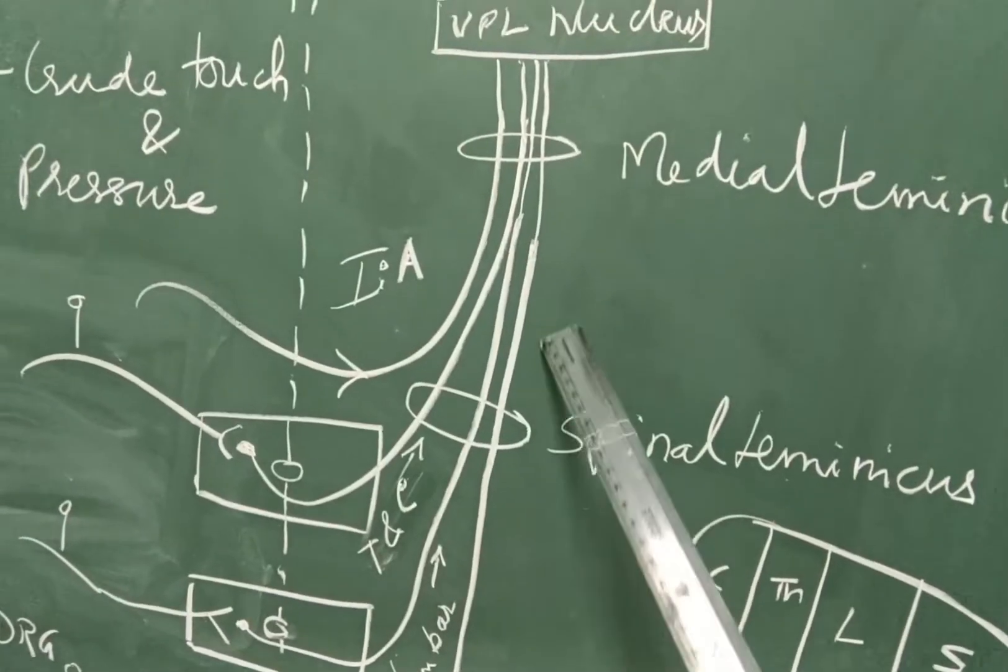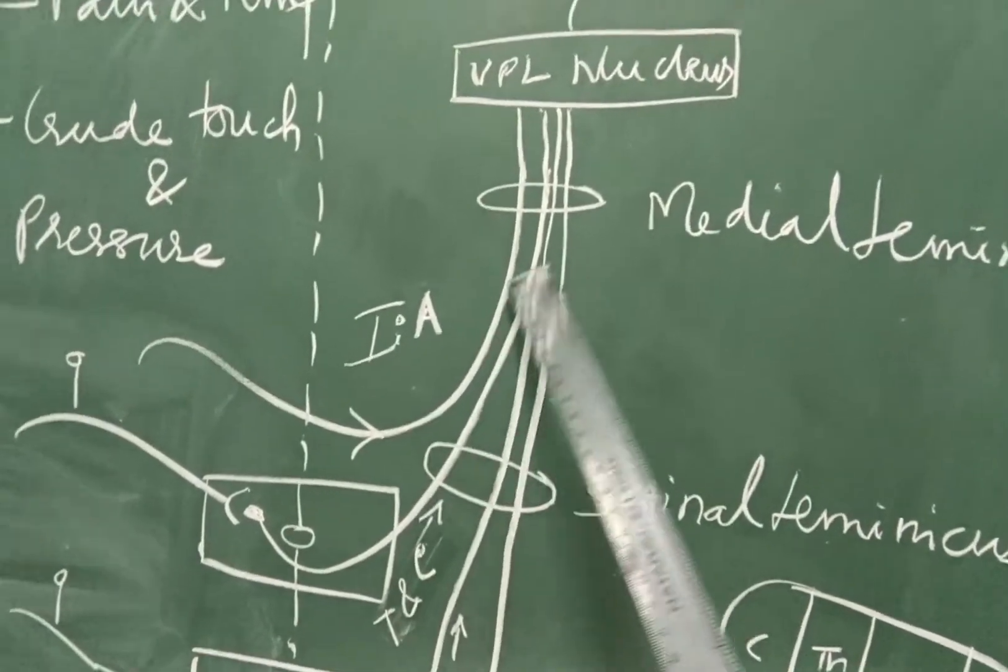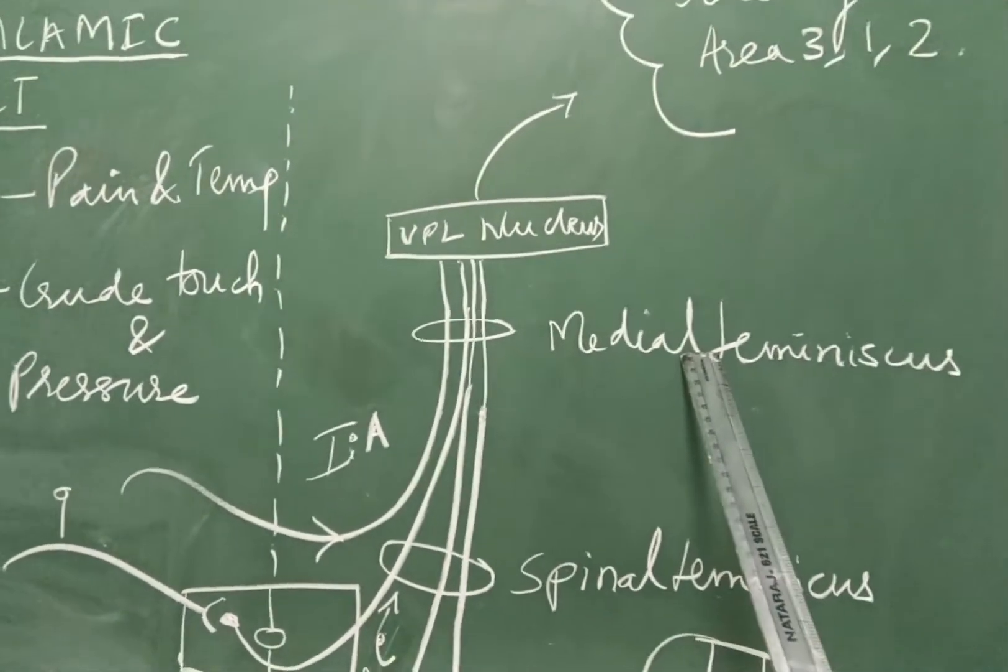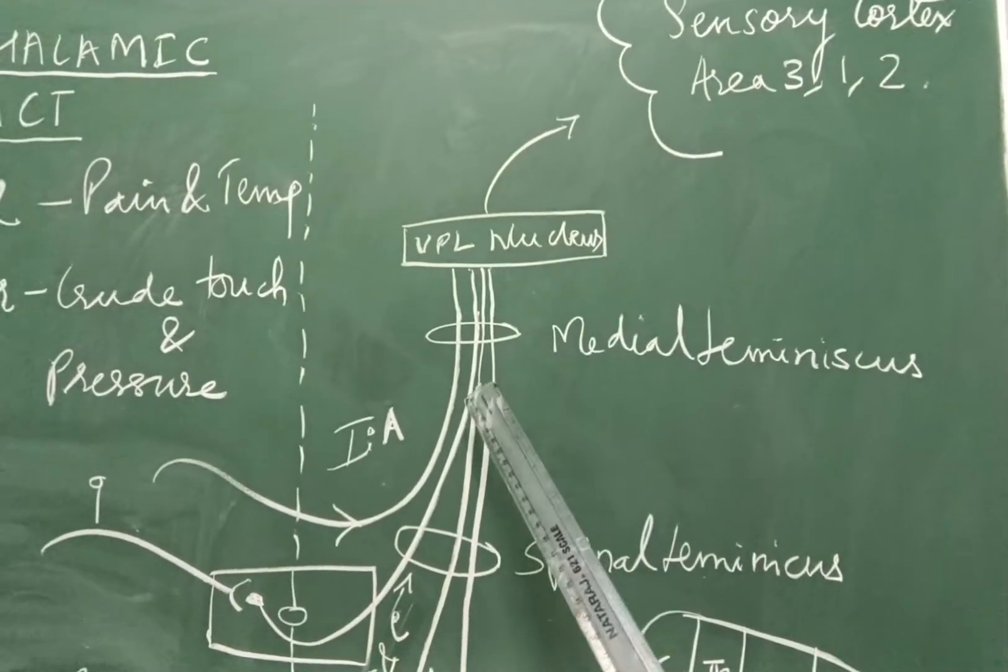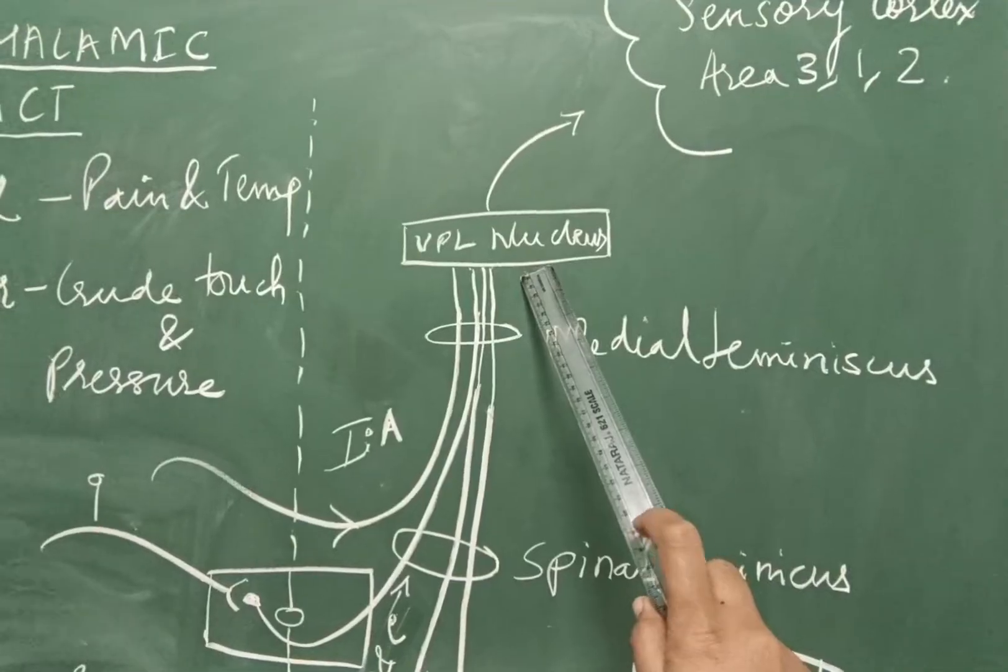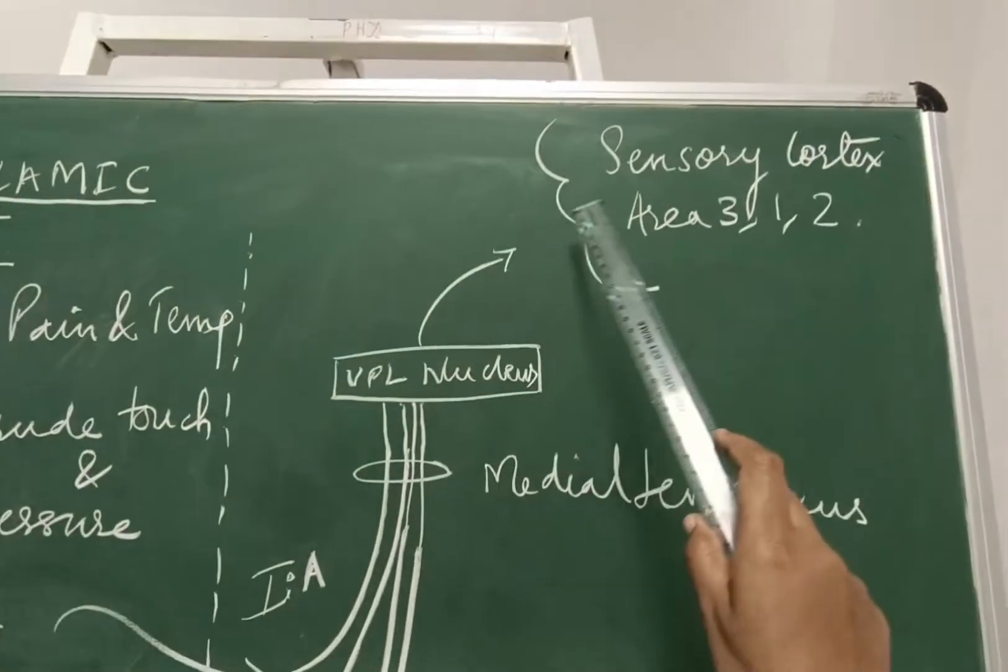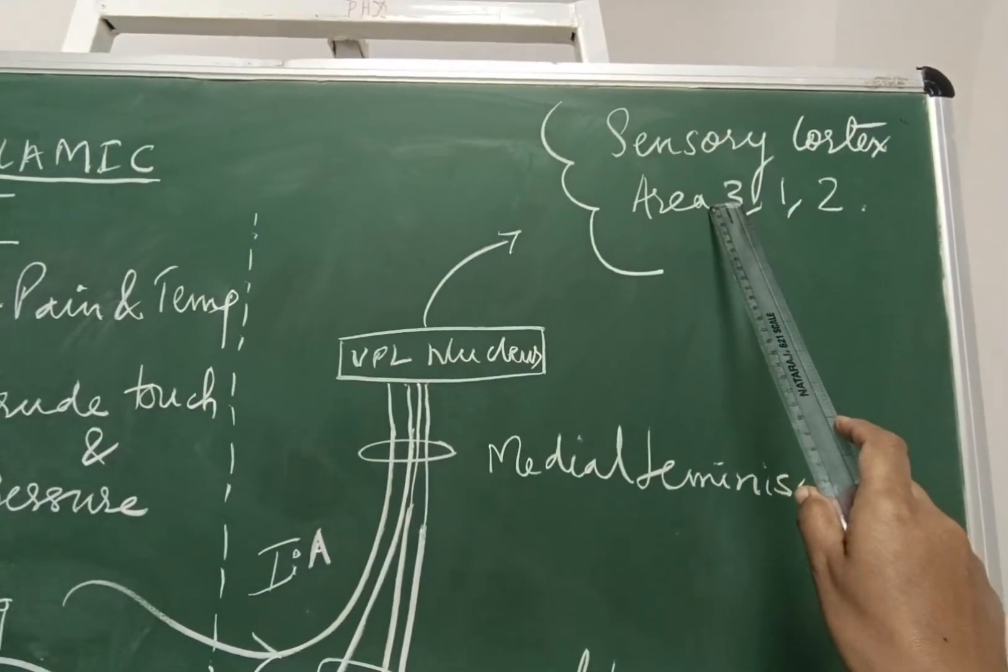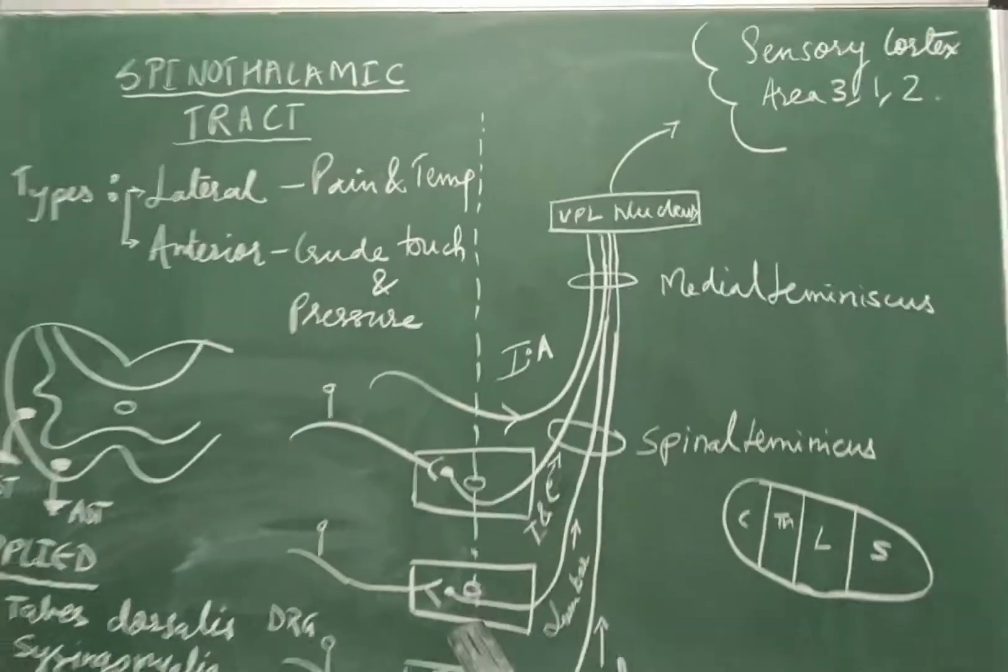As this tract ascends upwards, it unites with the internal arcuate fibres from the opposite side and forms the medial lemniscus. They ascend upwards to the ventroposterior nucleus of the thalamus and finally go to the sensory cortex area number 3, 1 and 2.